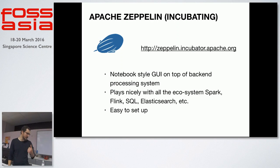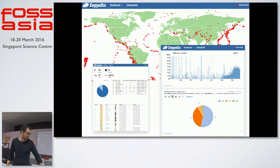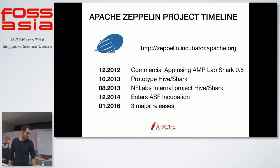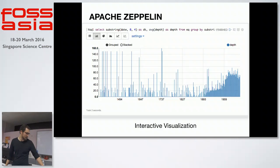The next one is Apache Zeppelin — the project I'm involved in. It's a GUI-style notebook that plays nicely on top of different backend processing systems, be that Spark or anything else. It's quite easy to set up and you can build interactive visualizations with it. I find it really helpful for getting started with a new project, building intuition around data, and eventually building a data product on top of it. It was recently donated to the Apache Foundation — it's been about a year — and it grew from two contributors to more than 70 worldwide through three major releases.